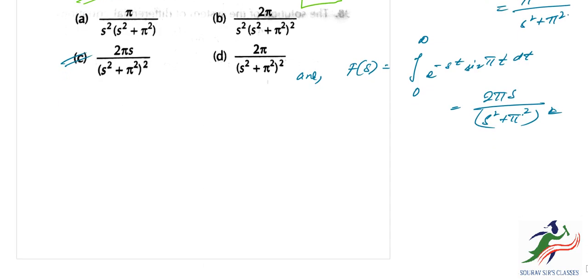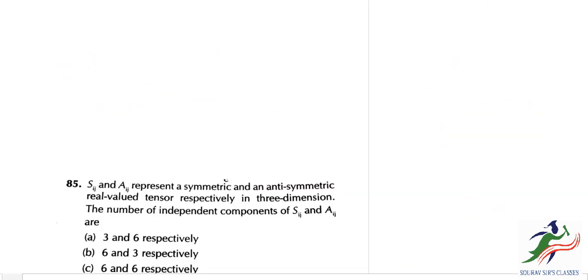Let's move on to the next one. So we have S_ij and A_ij represent symmetric and antisymmetric real-valued tensors respectively in three dimensions. The number of independent components of S_ij and A_ij are: